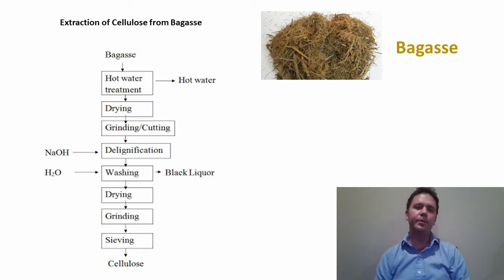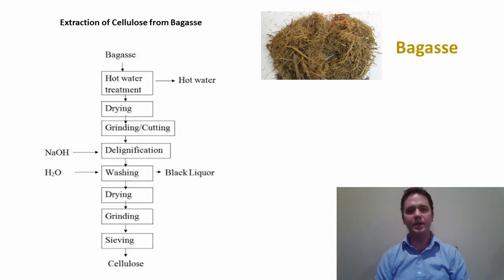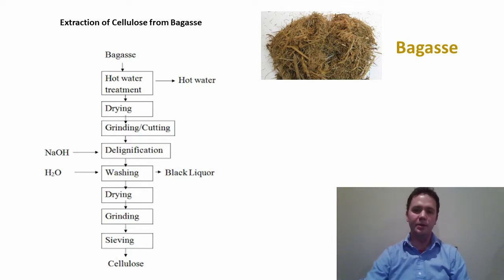The first step in producing ethanol from sugarcane involves extracting cellulose from its byproduct, bagasse. The bagasse is treated with hot water, dried, and then ground. It is then delignified with NaOH, washed with water, dried again, ground again, and sieved, producing cellulose.